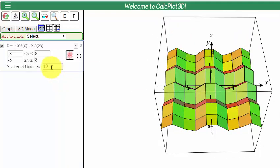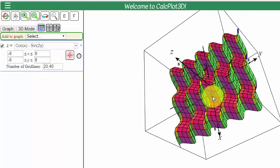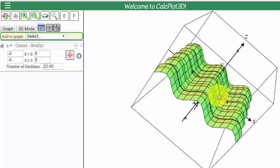I can also change x and y independently by using a comma. So let's suppose I want 20 grid lines in x, and let's say 40 grid lines in y. If I hit enter, we have it. So you'll notice that y has more than x.